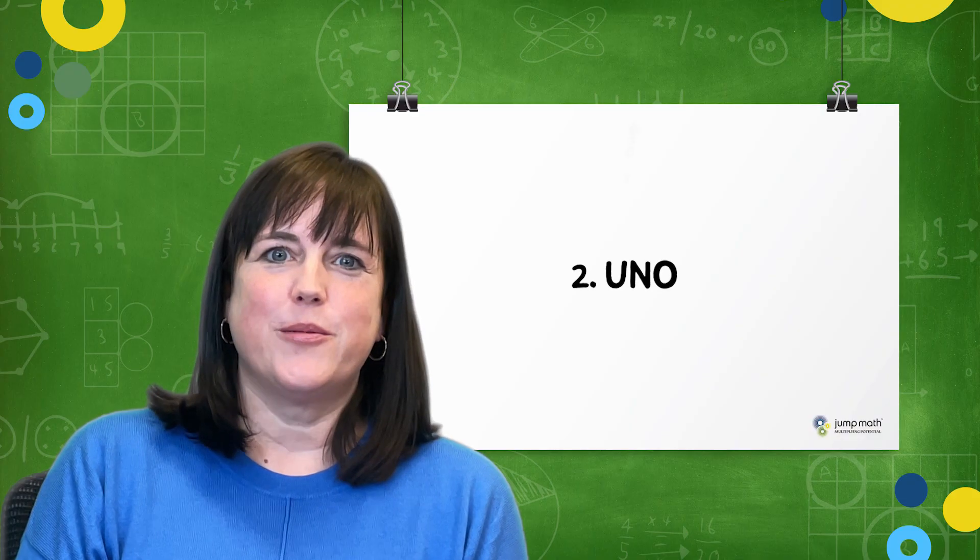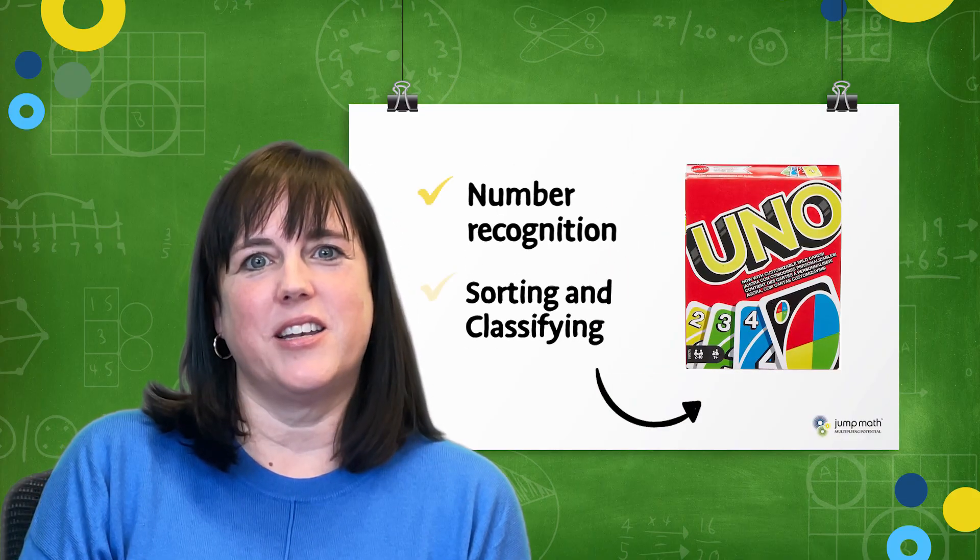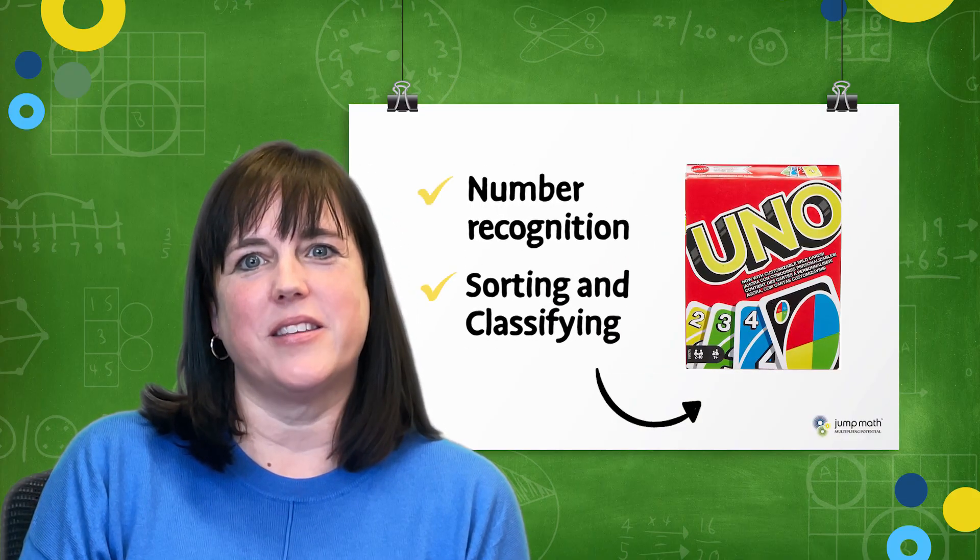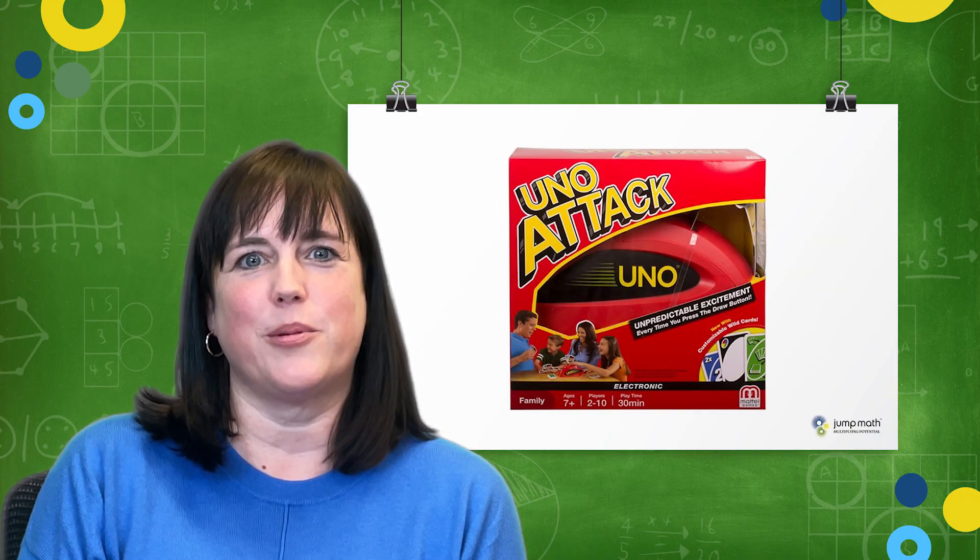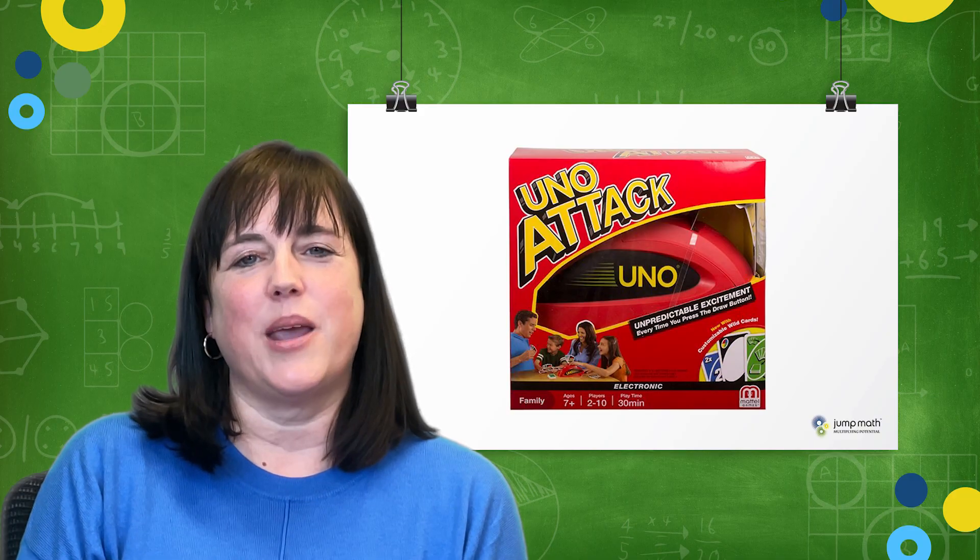Number two is Uno, which promotes number recognition, sorting, and classifying. You can find the standard version at most dollar stores, while fancy versions where the machine shoots out cards randomly when a player picks up cards can make the game even more fun.